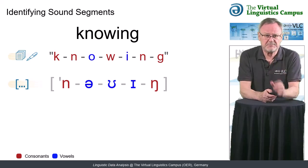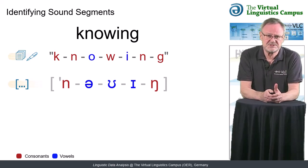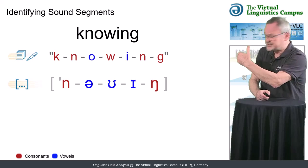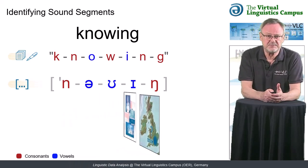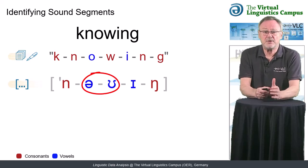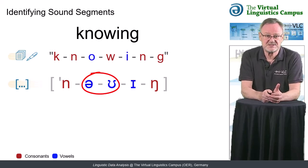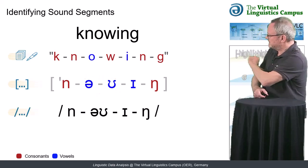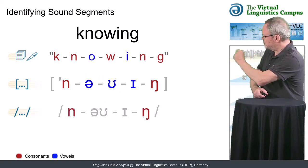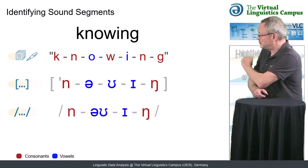However, in applying our knowledge about the sound system of present day English, here received pronunciation, the standard phonological dialect of England, we know that O is treated as a single vocalic phoneme. Thus, the phonemic analysis yields two consonants and two vowels.